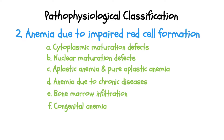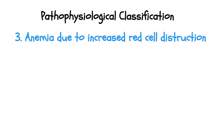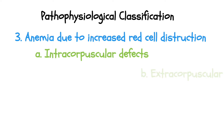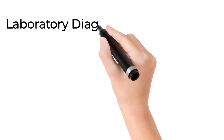Sideroblastic anemia and congenital dyserythropoietic anemia are two types of congenital anemias that cause impaired red cell formation. The third pathophysiological cause of anemia is increased red cell destruction, also known as hemolytic anemia. Red blood cells circulate for around 120 days; intracorpuscular and extracorpuscular defects make them likely to die sooner than they can be made.